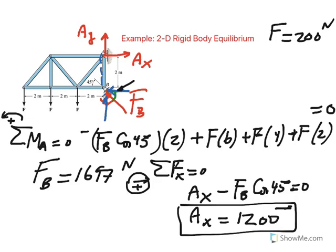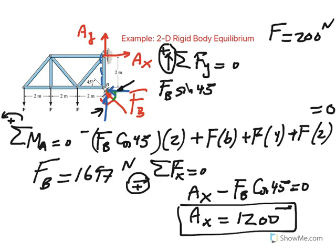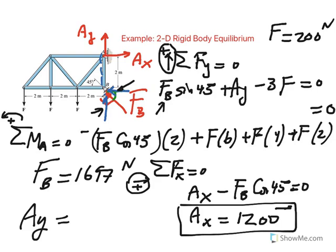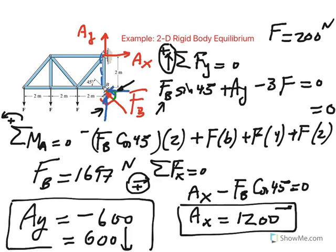For the sum of forces in the y-direction equals 0, taking upward as positive: we have the y-component of F sub B, which is F sub B sine 45, plus Ay, minus three applied forces of F each (with F = 200 newtons). Plugging in F sub B = 1697 and solving for Ay, it comes out to be negative 600 newtons, which means Ay is actually 600 newtons pointing in the opposite direction to what we assumed. The units are newtons.